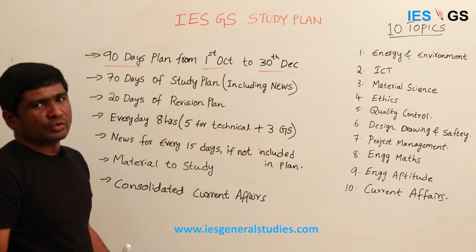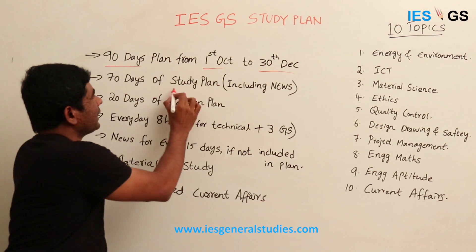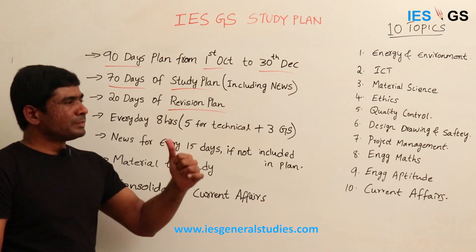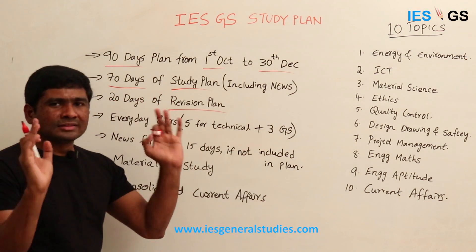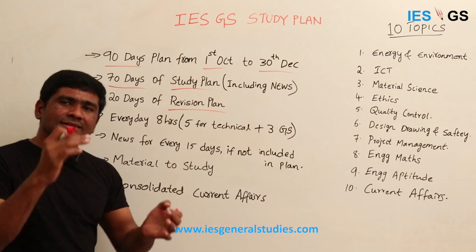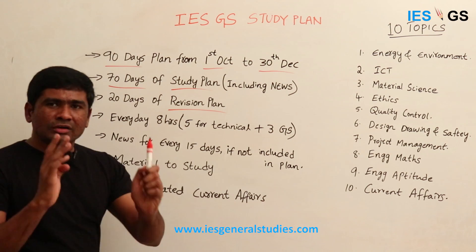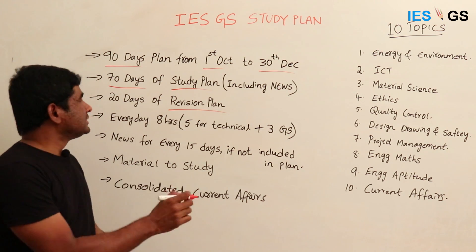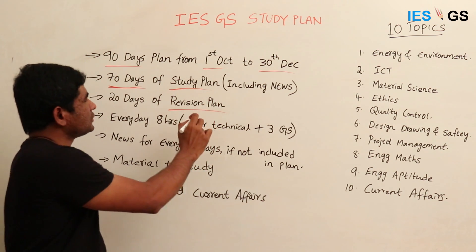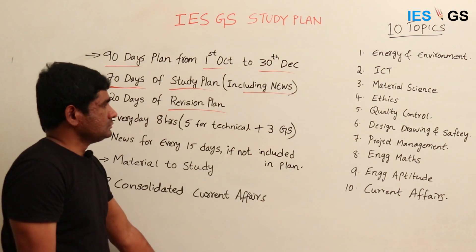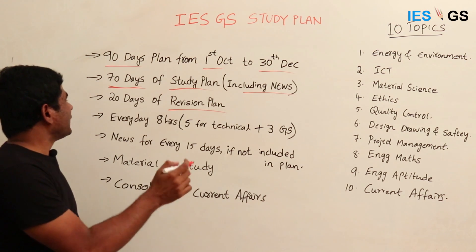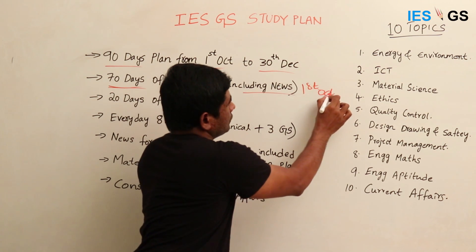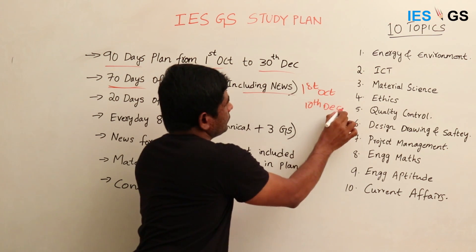This 90-day plan is again divided into a study plan and a revision plan. The study plan covers 70 days, during which we have considered the whole syllabus including different topics and concepts, resulting in a detailed daily plan available on our website. The 70-day plan runs from October to 10th December, covering study including current affairs news.